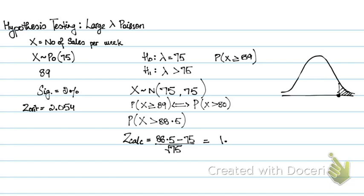So this value is 1.5588, somewhere over here. This is my z-calculated, the yellow one. Since my z-calculated lies in the acceptance region, I will accept H0, or I will say that the lambda or the mean number of sales has not changed.